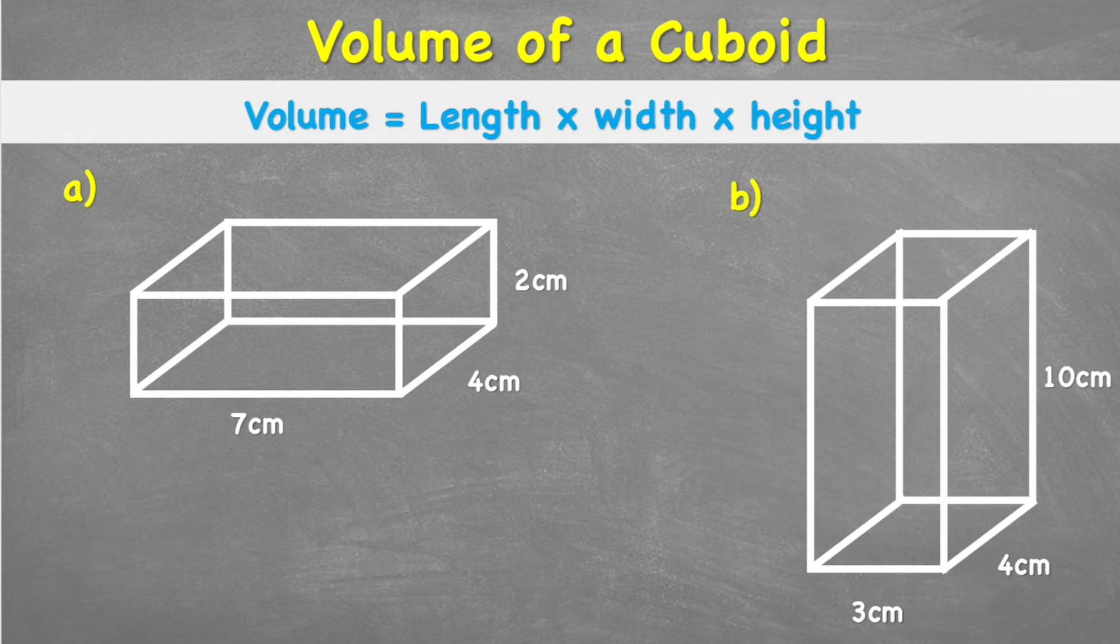Okay, so to work out the volume of a cuboid, we have this super simple formula, which is basically length times width times height.